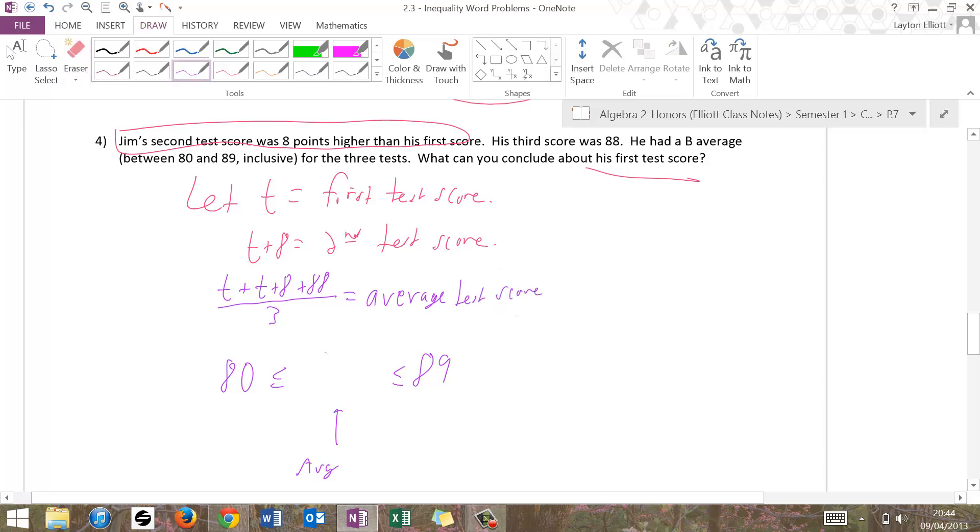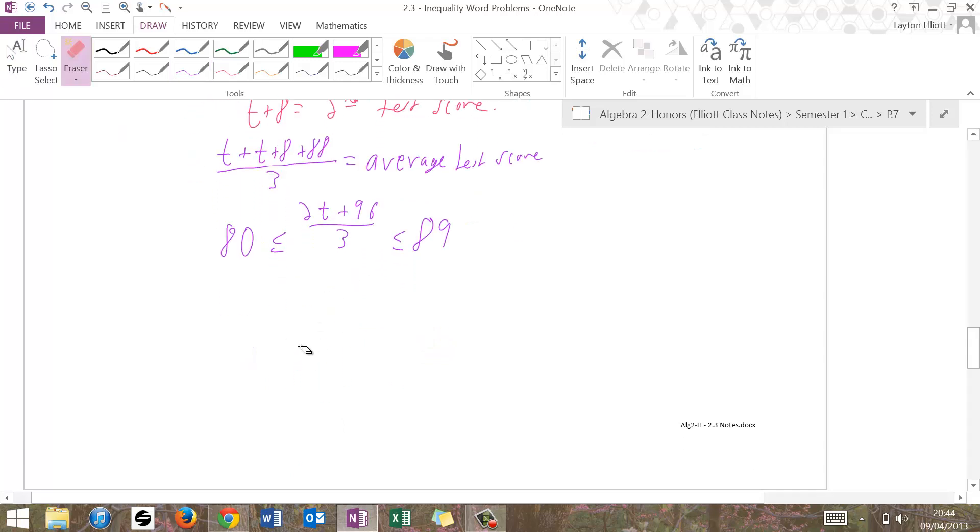That way on the next step I can simplify that a little bit. That's 2T plus 96 over 3. So now this is what we're going to solve. Multiply all three sides by 3, and I get 240 less than or equal to 2T plus 96, less than or equal to, that'd be 270 minus 3, or 267. Subtract 96.